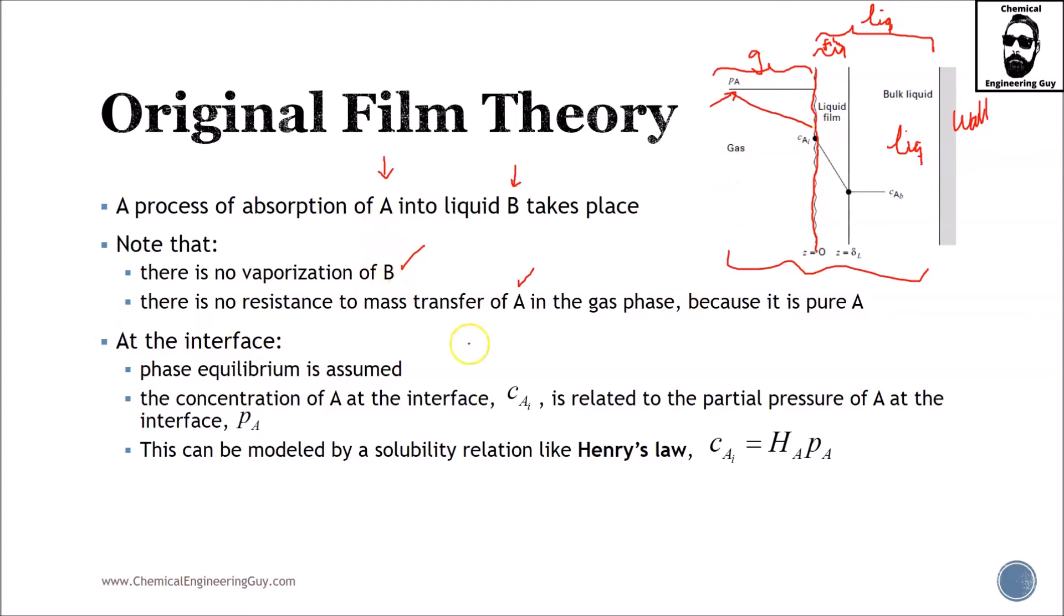There is no resistance to mass transfer of A in the gas phase because it's pure A. The mass transfer of ammonia has no resistance to go from gas phase to liquid phase. The resistance is actually from the liquid film. At the interface, phase equilibrium is assumed.